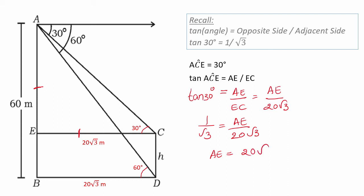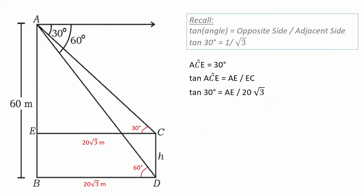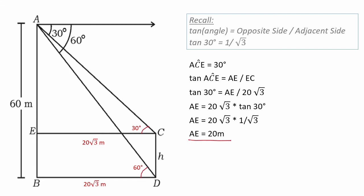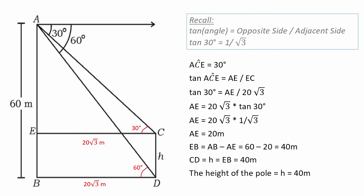Solving, AE equals 20 root 3 divided by root 3, which is 20 meters. Once we know AE is 20 meters, we can calculate EB as 40 meters. So EB equals 40 meters, and hence the height of the pole is 40 meters.